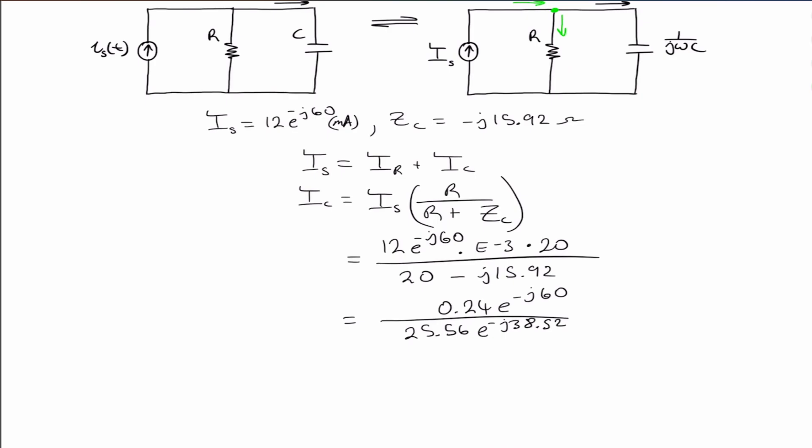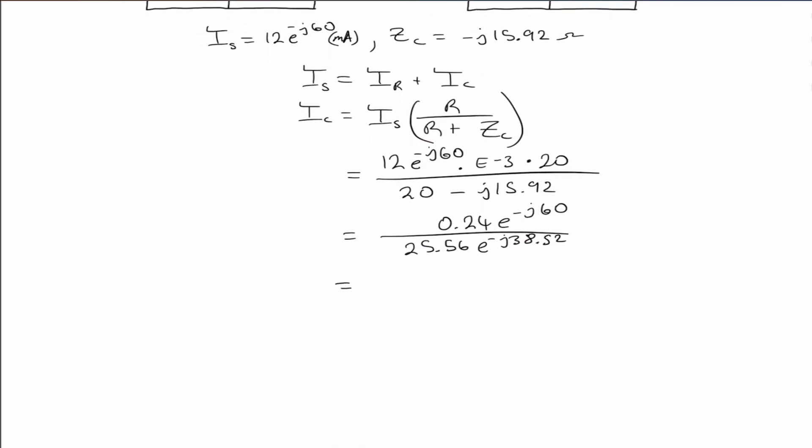In polar form, we divide. Polar form is easier to divide. We divide and multiply in polar form, add and subtract in rectangular. So here we have polar form, we divide. This then equals 9.4 e to the minus j 21.5.